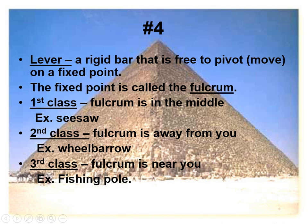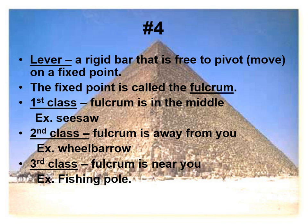A lever is a rigid bar that is free to pivot on a fixed point called a fulcrum. A seesaw is first class, where the fulcrum is in the middle. Second class, the fulcrum is away from you. Third class, it is near you. For example: first class is bending your arm at the elbow — right in the middle. Second class is bending only at the wrist, away from you, allowing it to pivot as you move your hand back and forth. Third class is keeping the whole arm still and moving it at the shoulder. So remember: elbow, wrist, shoulder — first, second, third.